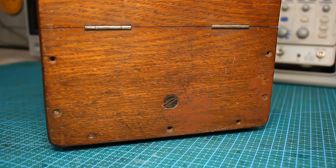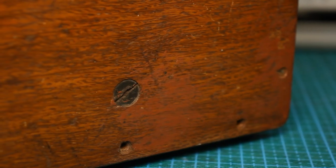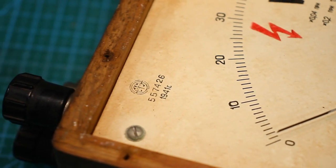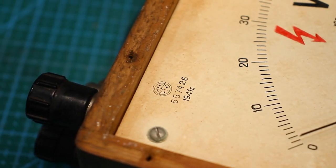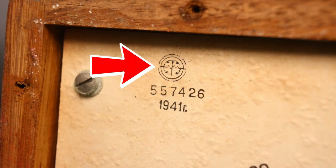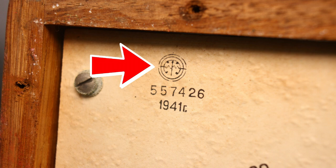At the bottom of the faceplate, there is a zero adjustment, a potentiometer. Judging by the inscription on the scale, the device was released in 1941, so it's more than 80 years old. Of the other identification marks, we can see the emblem of the manufacturer at the very top of the scale.